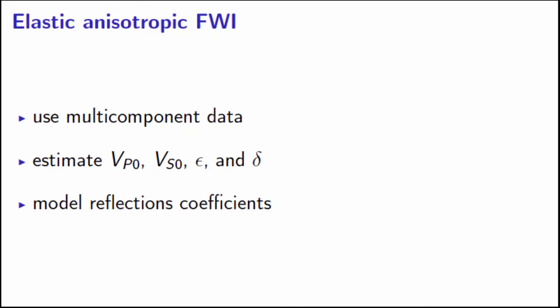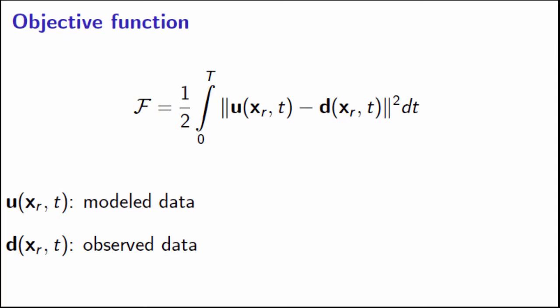So the objective function is the quite familiar L2 norm of the difference between the observed data D and model data U. The summation over shots and receivers is implied in this case. Last year, I showed you in some details about how we get from the objective function to the gradient of the objective function by setting up the Lagrangian and doing some algebra. John showed us a couple of days ago how to do that even in a lot of steps and with a lot of clarity. So I'm not going to go over those steps again.